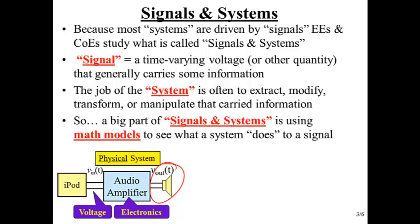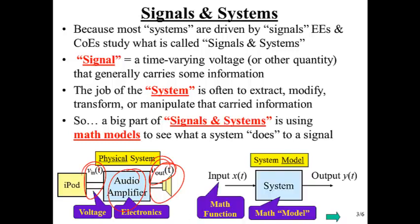But the iPod we can think of as creating some input voltage. The audio amplifier is going to create some output voltage. And that audio amplifier might change the amount of bass or treble or mid-range, some sort of tone control. And we can think of that as modifying the signal that goes through. Not really information per se, but we can think of it that way. Now that's the physical system.